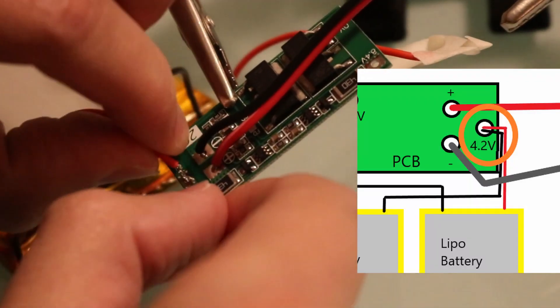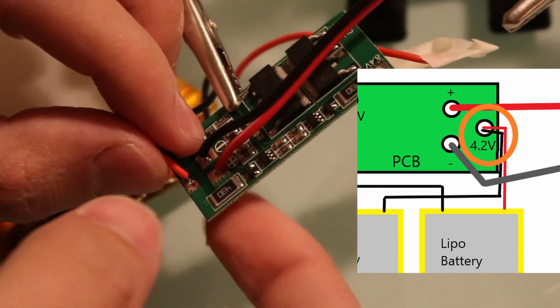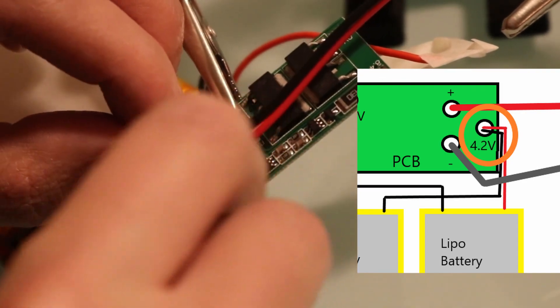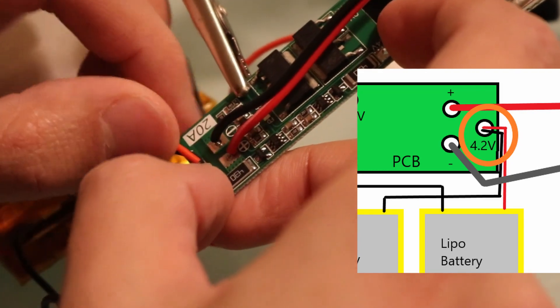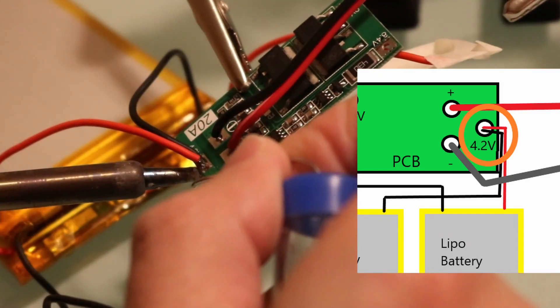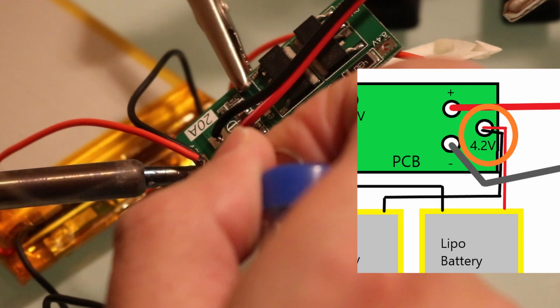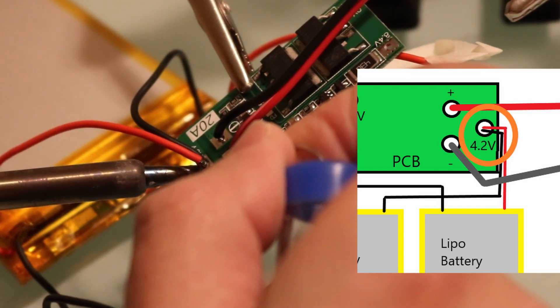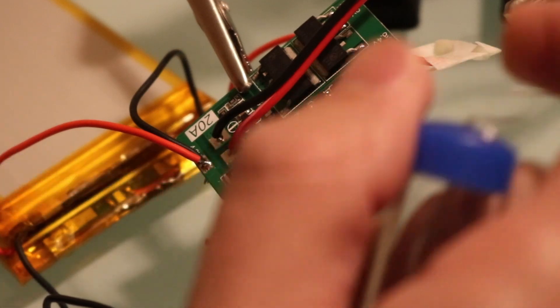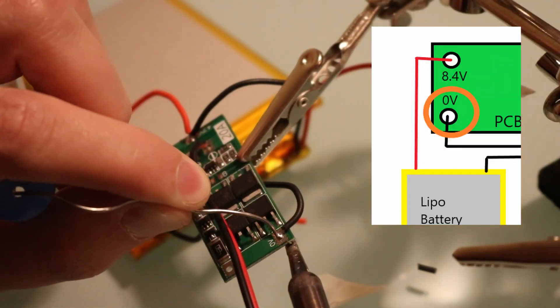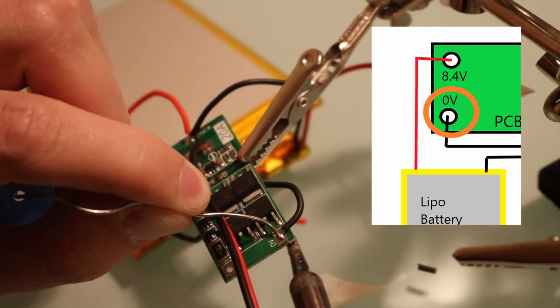Next I'm going to solder the midpoint. I've got the negative and positive from each of the separate batteries together and I've twisted them. Now I'm going to thread them through the hole here. Next is the zero volt black wire.